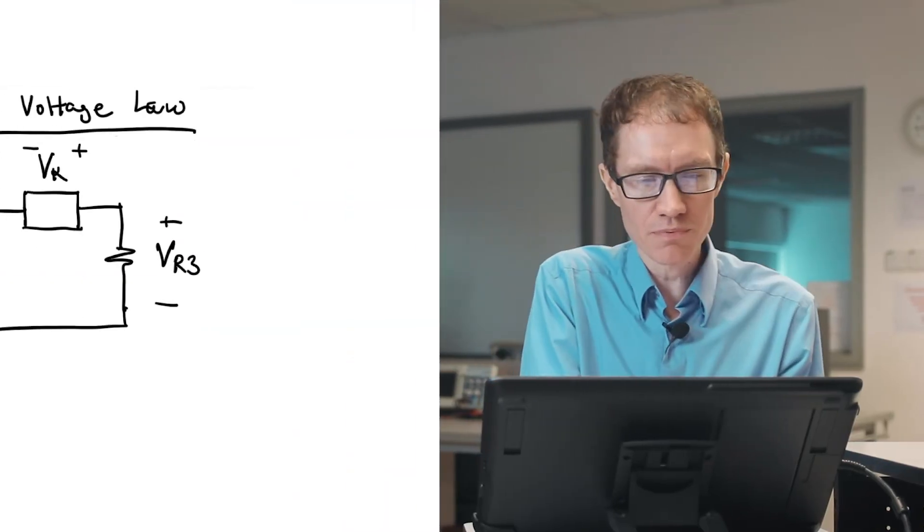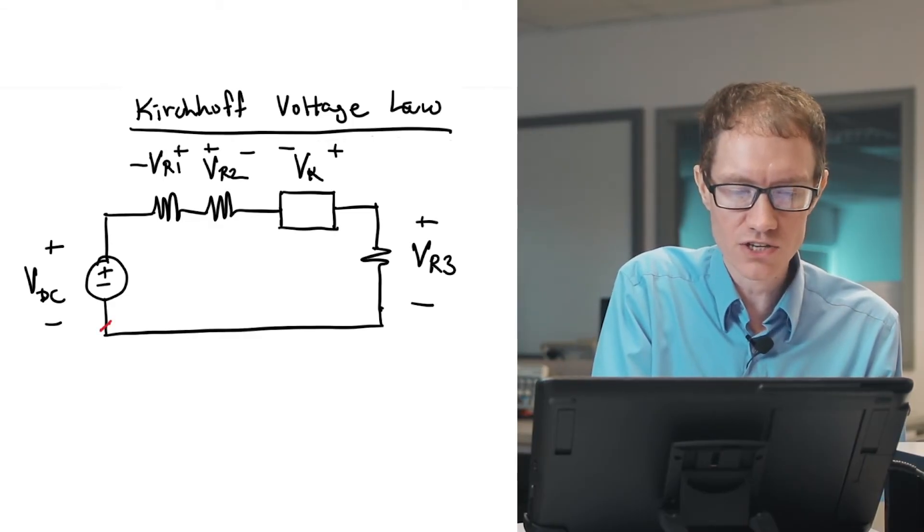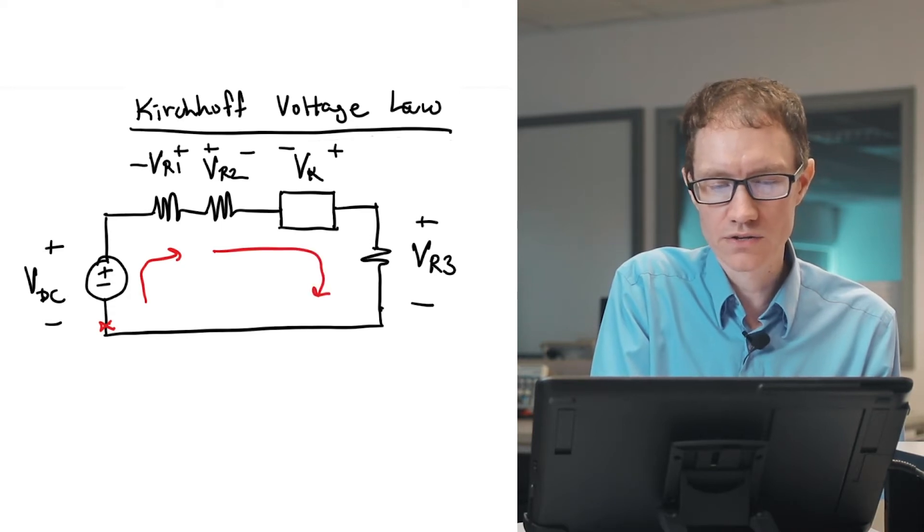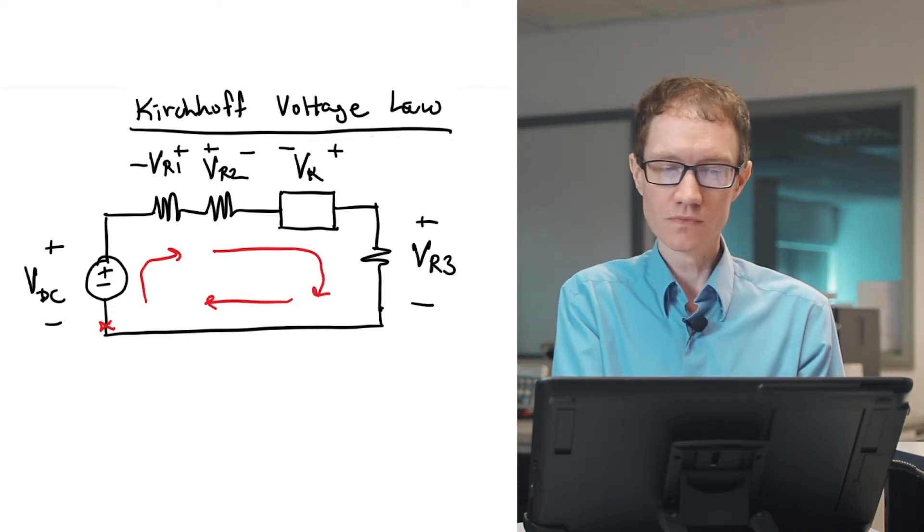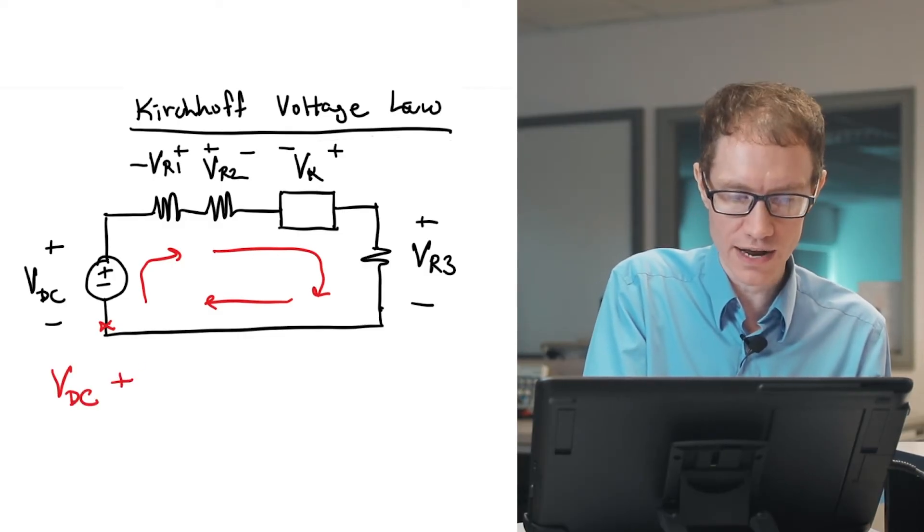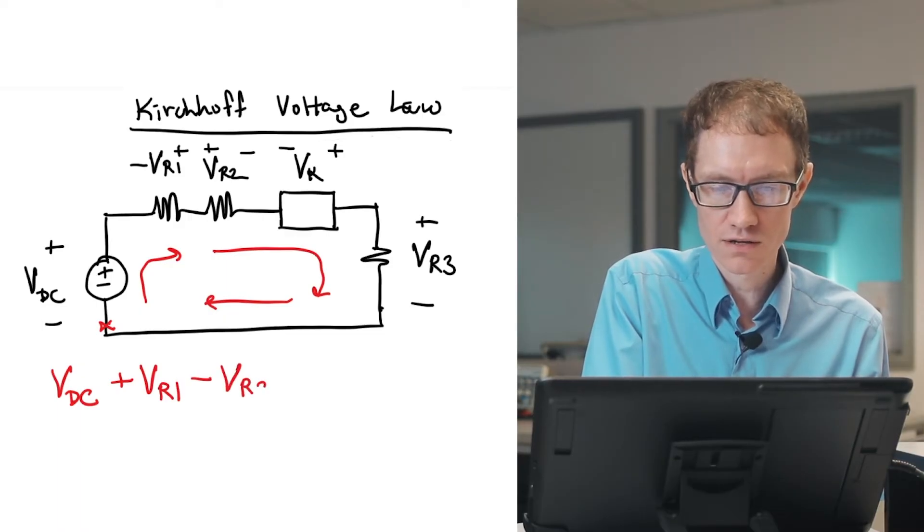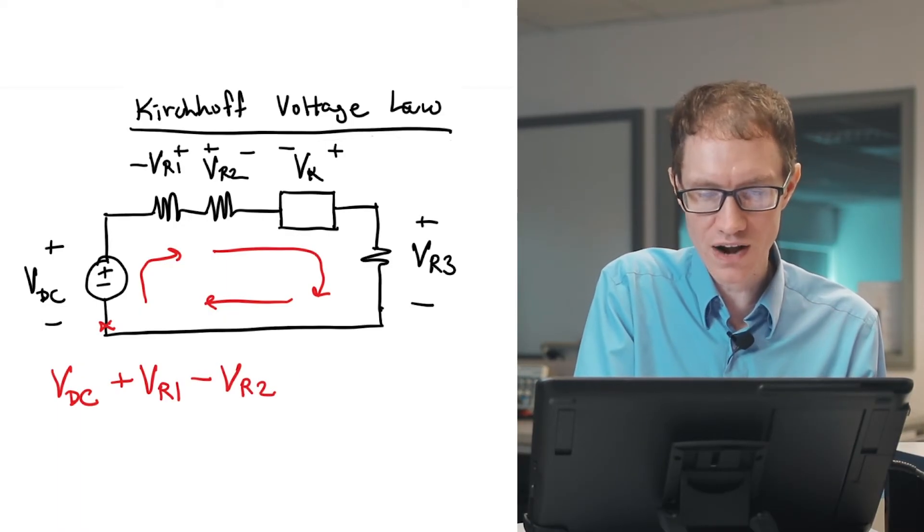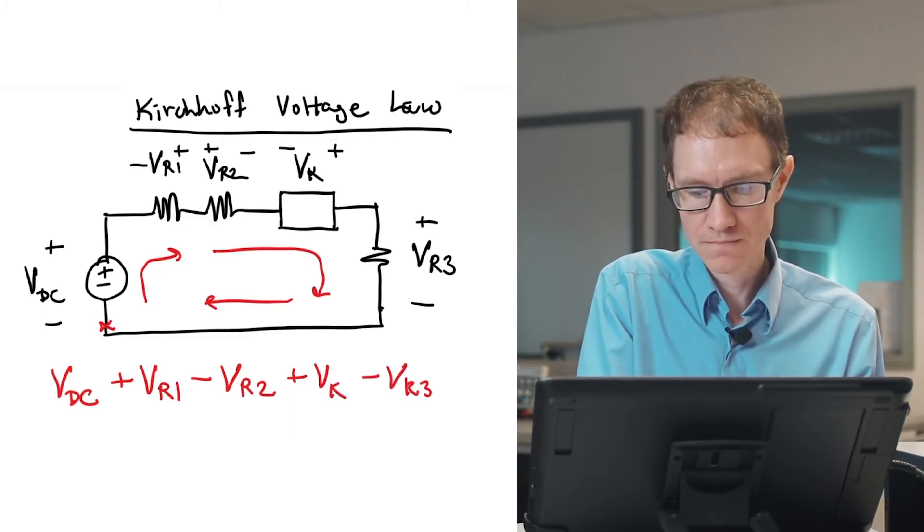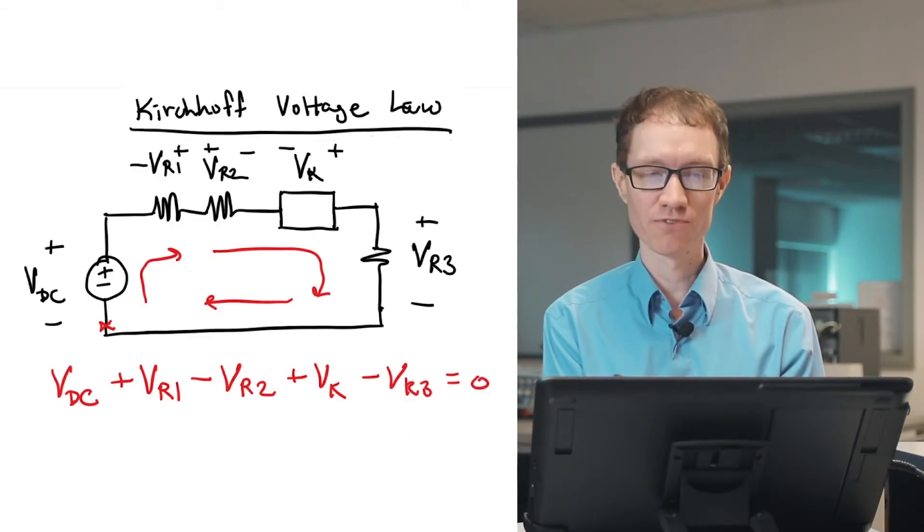Let's go ahead and apply the Kirchhoff voltage law using the polarities that I indicated here. Let's start my loop down here and we'll work our way around. First I have a voltage rise, then I have another voltage rise, so I'm giving it a positive sign. Then I have a voltage fall, then I have a voltage rise, and then I have a voltage fall. And those all have to add up to zero according to the Kirchhoff voltage law.